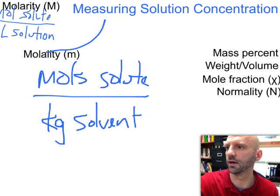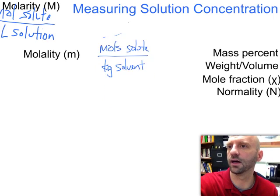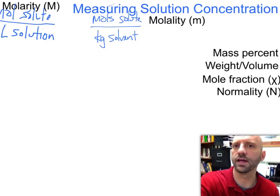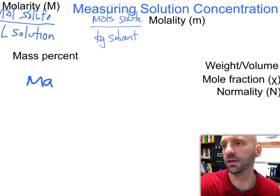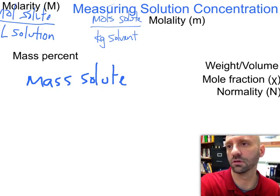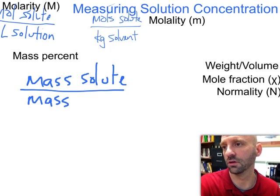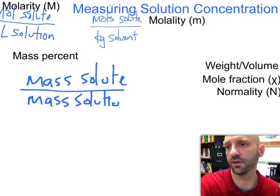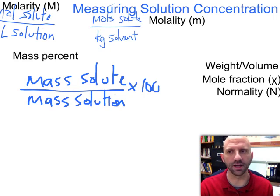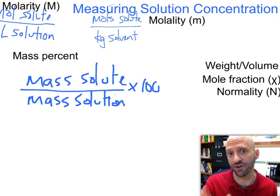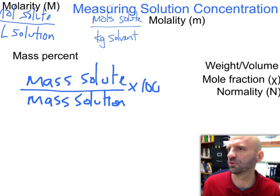Next, mass percent. You've done mass percent plenty of times before. This is going to be the mass of the solute divided by the total mass of the solution, everything together, and since it's a percent we're going to multiply it by a hundred. We could also do volume percent.